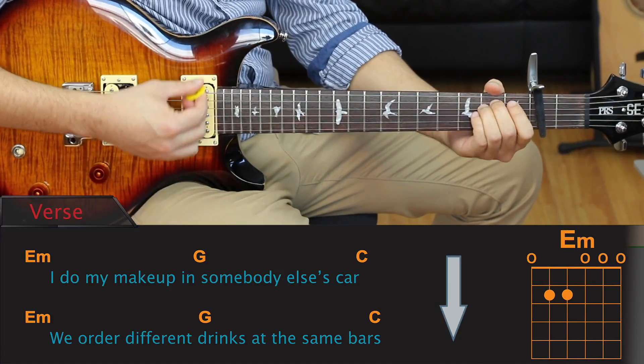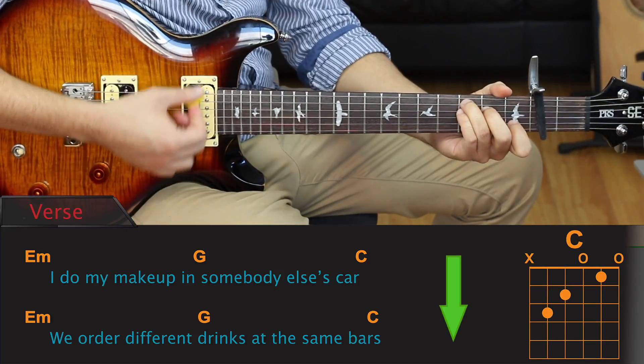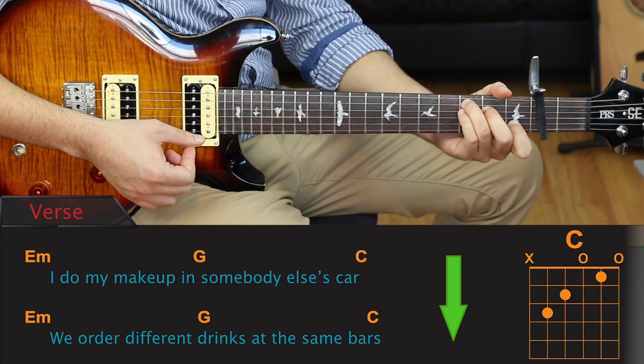And then we just repeat E minor, G, and C twice more for the final two lines of the verse.